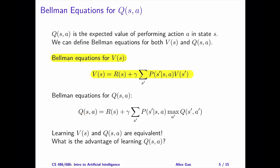Since V and Q are closely related, we can write down the Bellman Equations in terms of the Q values as well. Q is equal to the immediate reward of entering state S plus the expected utility of performing action A in state S.